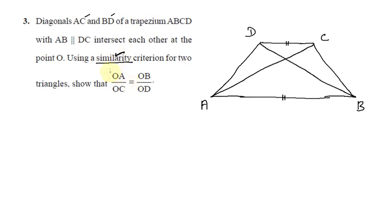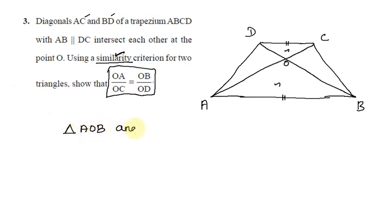We will prove OA by OC equals OB by OD. We will consider two triangles. The triangles intersect at the same point O. We will work with triangle AOB and triangle COD.